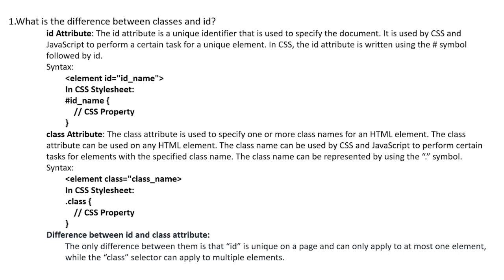The class attribute is used to specify one or more class names for an HTML element. The class attribute can be used on any HTML element. The class name can be used by CSS and JavaScript to perform certain tasks for elements with the specified class name. The class name can be represented by using the dot symbol. The only difference between them is that ID is unique on a page and can only apply to at most one element, while the class selector can apply to multiple elements.